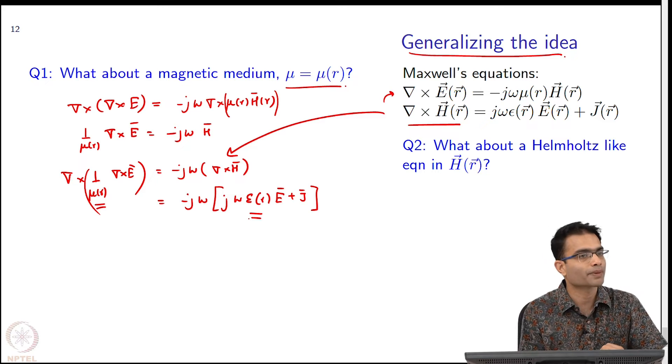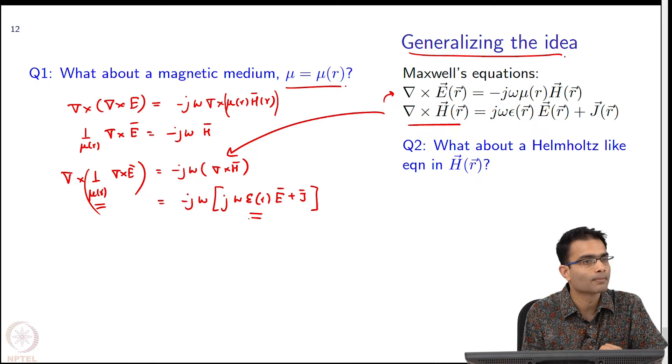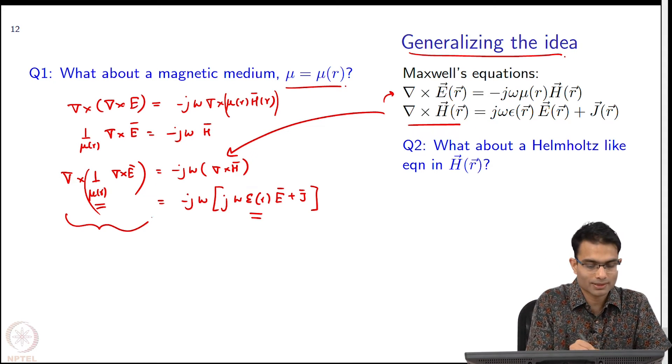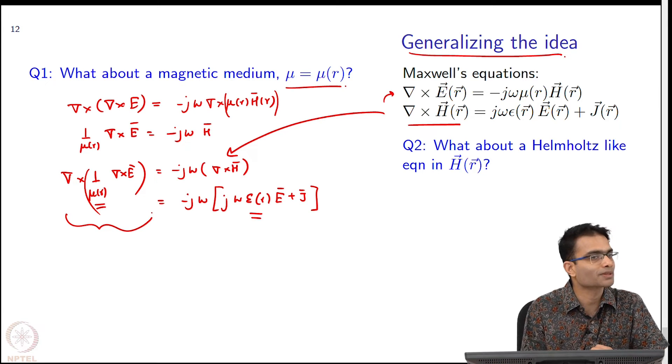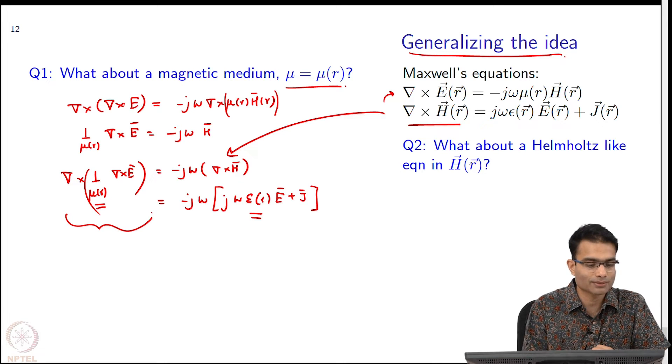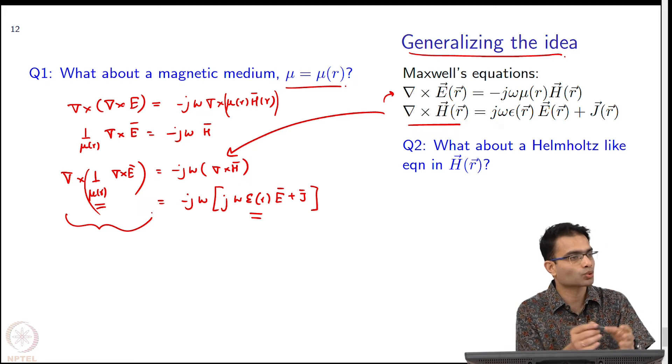So, I have got one equation in electric field which has all the given information about the problem, the given information is mu r and epsilon r. What is the price I have to pay?